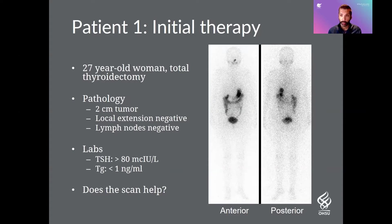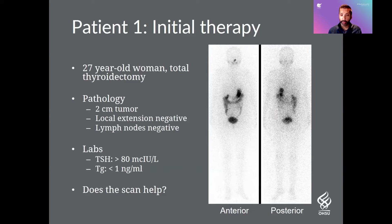The labs are also important. TSH is used to understand whether the patient has been properly stimulated — anything above 50 is considered good stimulation, and this patient was over 80. Anyone who gets Thyrogen almost always has really good stimulation. The thyroglobulin, which is the key tumor marker for thyroid cancer, was basically undetectable in this case. Looking at this scan, everything we're seeing is actually just normal — normal uptake in the salivary glands, normal uptake in the stomach, normal clearance in the bowel, and some activity in the kidneys and bladder.